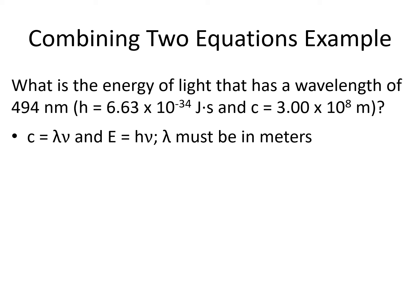We are going to go from wavelength to frequency using the c equals λν equation, and from frequency to energy using the E equals hν equation. Wavelength has to be in meters for our first equation. So we take our 494 nm and multiply by 10 to the minus 9 and get 4.94 times 10 to the minus 7 meters.